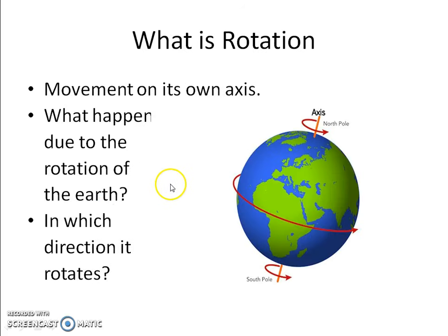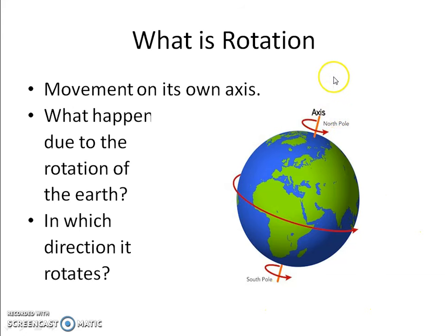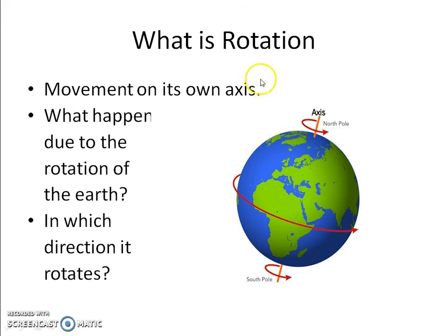Okay friends, so let's start. What is rotation? Rotation means when the earth spins on its own axis. You must have seen a globe in school — it has a metal rod through it and the globe spins around that rod. That rod represents the axis of the earth. When the earth starts spinning around its own axis like that, it is known as rotation of earth. In English, the movement of earth on its own axis is known as rotation.